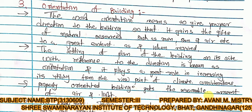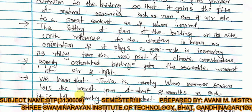A properly oriented building gets a reasonable amount of air and light. Sometimes when you visit a building with no proper ventilation, there is no air or light inside — that is called bad planning, meaning the orientation is incorrect. Due to poor orientation, the building remains dark, there is no proper light, no air circulation, and there is suffocation.